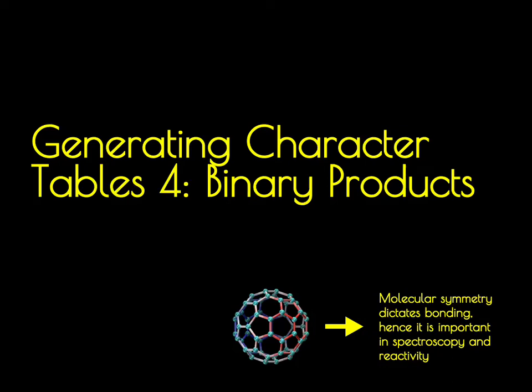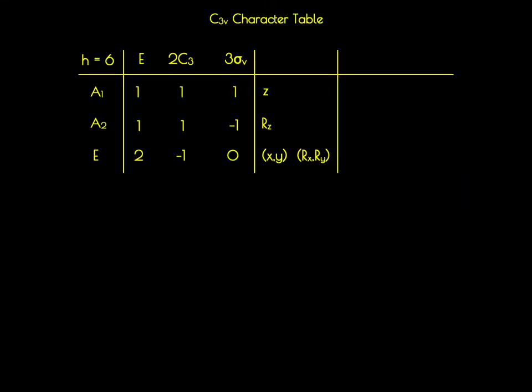In this final video on constructing character tables, we're going to determine how the binary products of the C3V point group transform. In previous videos, we've determined which classes the six different symmetry elements of the C3V point group belong to and divided those elements into their classes. We've determined the irreducible representations, how the linear vectors transform, and how the rotational vectors transform. In this video, we're going to determine how the binary products transform.